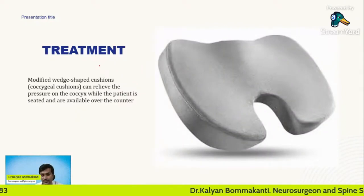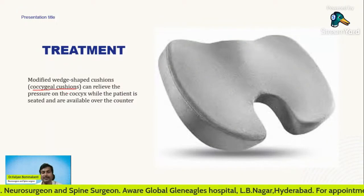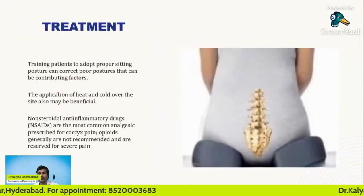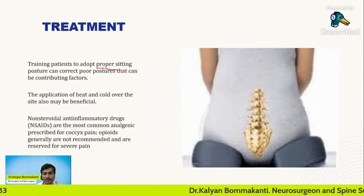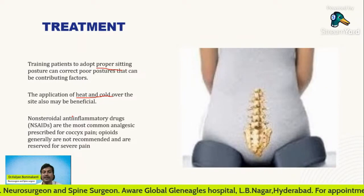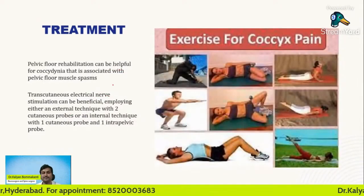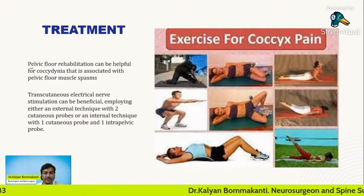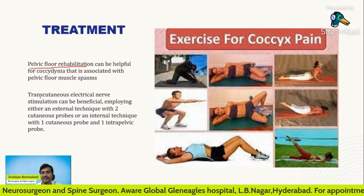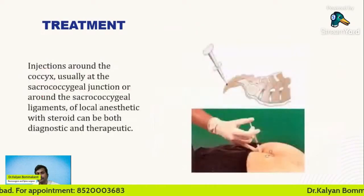Treatment: prevention is better than cure. The initial part of treatment usually consists of using specially made coccygeal cushions — designed so that when you sit, the pressure is not borne by the coccyx. These are usually available over the counter. We also teach the patient to adopt proper sitting posture. Application of heat and cold over the site is also beneficial. We use analgesics in the form of non-steroidal anti-inflammatory agents; sometimes opioids are given but reserved only for severe pain. Various pelvic floor rehabilitation exercises are available, designed to decrease pelvic floor muscle spasm. TENS — transcutaneous electrical nerve stimulation — is also beneficial, given either with two external probes or one internal and one external probe.